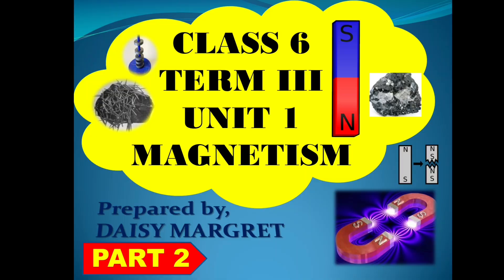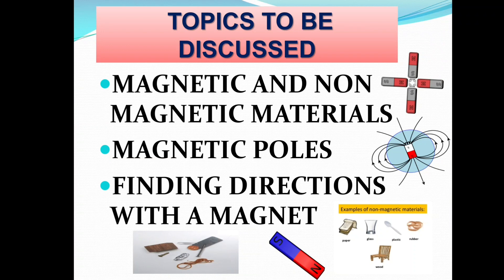In this video, we are about to discuss Class 6, Term 3, Unit 1, Magnetism. This is Part 2. Topics to be discussed: magnetic and non-magnetic materials, magnetic poles, and finding directions with a magnet. In the last video, we discussed the discovery of magnets and different shapes of the magnet. Here, the first topic we are about to discuss is magnetic and non-magnetic materials.